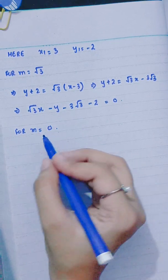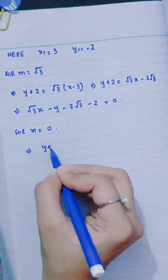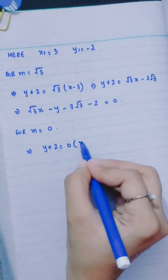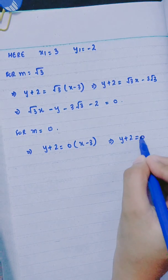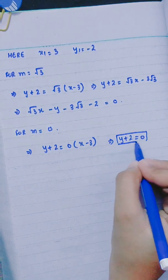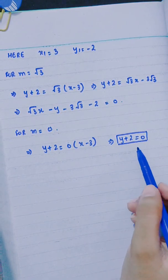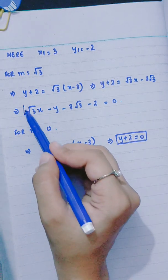For m = 0: y + 2 = 0(x - 3), and the other equation is y + 2 = 0.